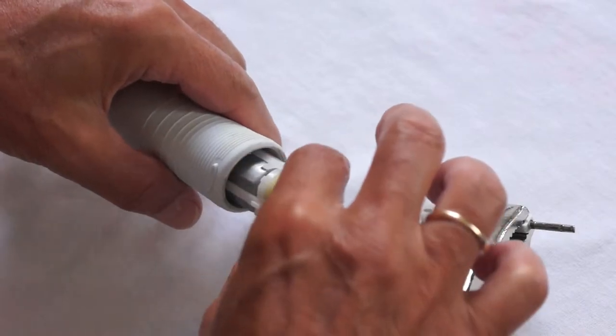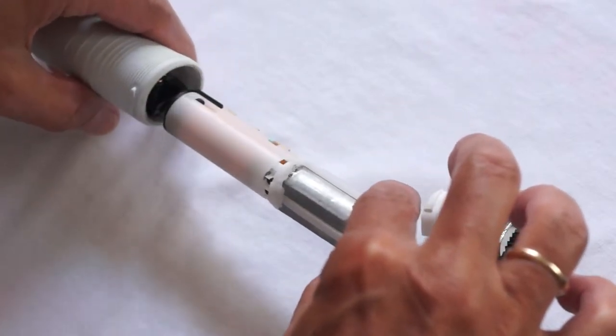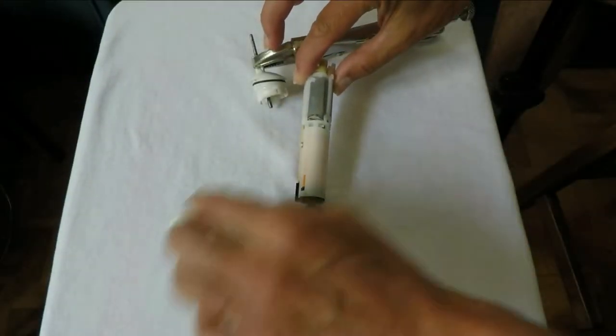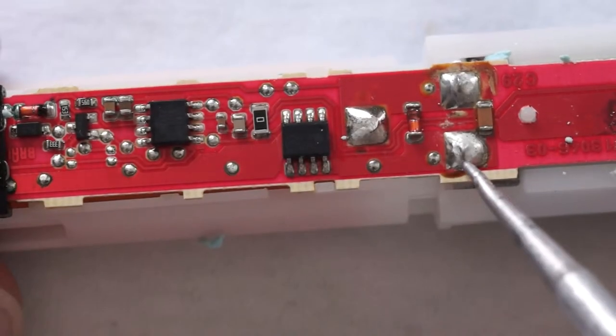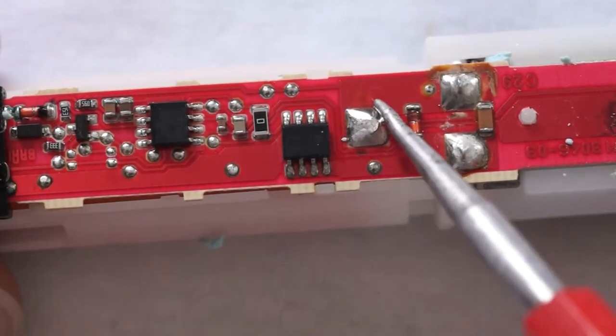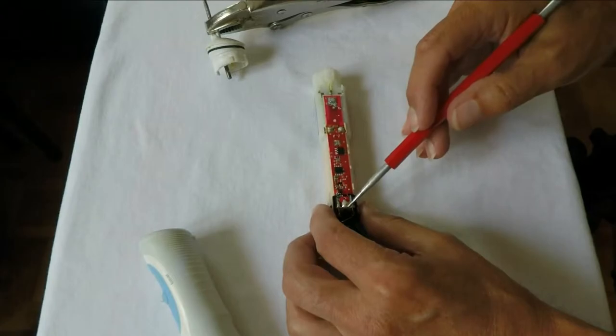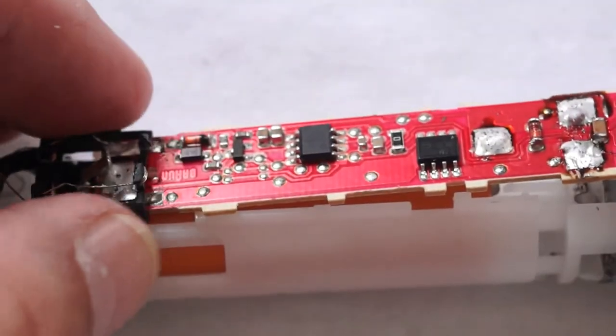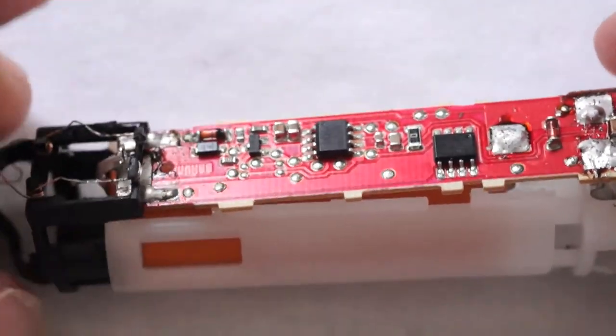This electric toothbrush is a perfect example of built-in obsolescence. Why do you have to own a soldering iron to get to the battery? There's no excuse for not designing this with a simple battery compartment or chamber for easy replacement.